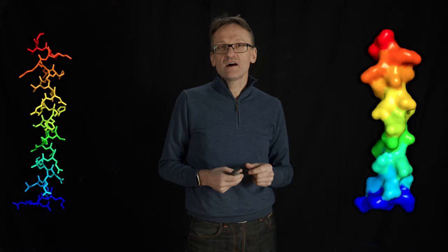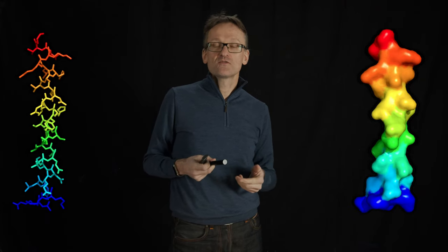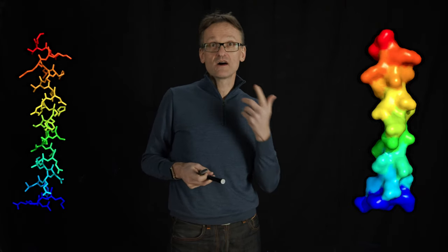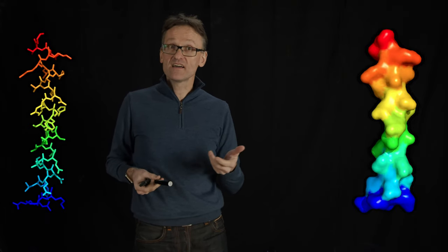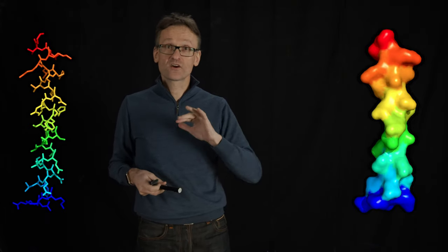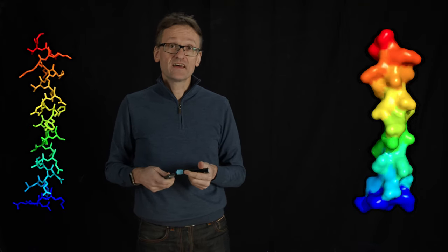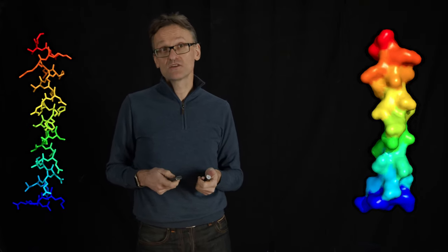Now I told you that there are hydrogen bonds from amino acid I to I plus 4, and that of course means that amino acid I and amino acid I plus 4 are going to be somewhat close to each other, and that also means that their side chains are going to be somewhat close to each other.